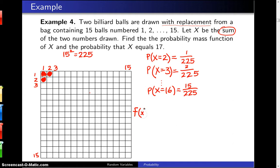f(x), in this case, can be written as 15 minus the absolute value of x minus 16, divided by 225.